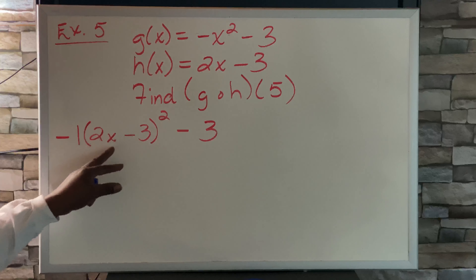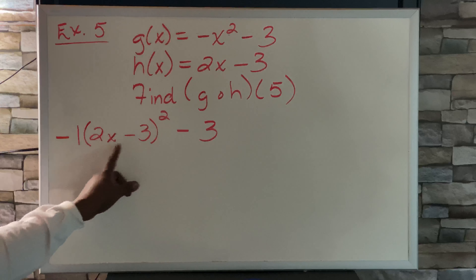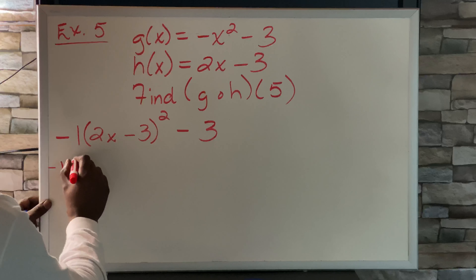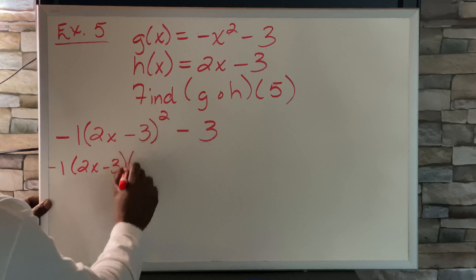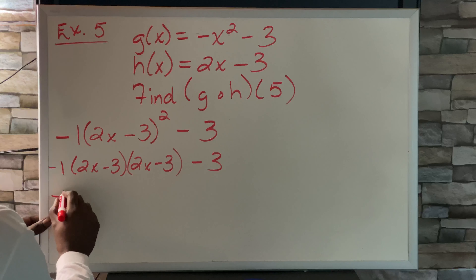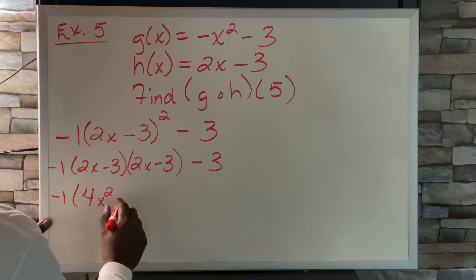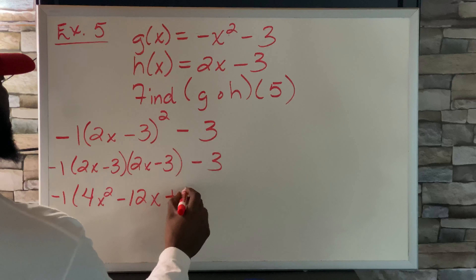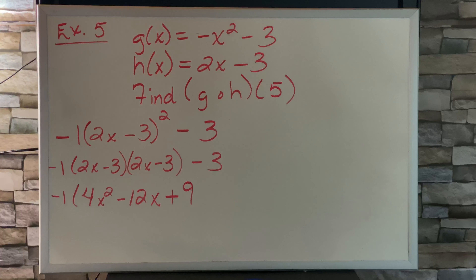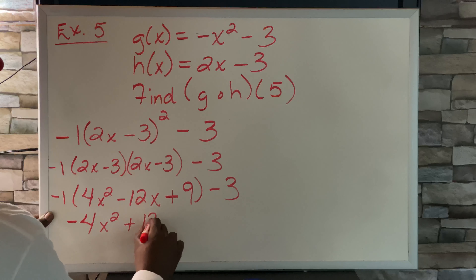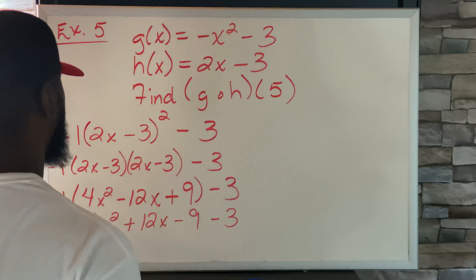We have 2x minus 3 squared, which is a squared binomial, so we use the FOIL method: 2x minus 3 times 2x minus 3. That gives us 4x squared minus 12x plus 9, minus 3. Distributing the negative 1: negative 4x squared plus 12x minus 9 minus 3.